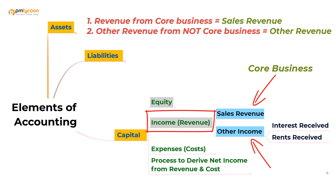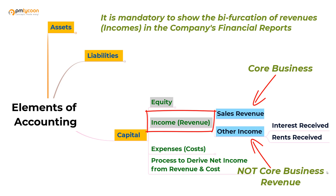The income received from the sale of core operations is called revenue, and the income received from non-core activities is called other revenue. We need to show this bifurcation of incomes in the financial reports — how much revenue was received from core operational activities and how much revenue was generated from other activities. Some may think revenue is revenue, whether it is direct or indirect.